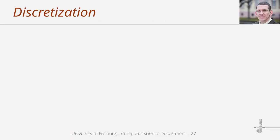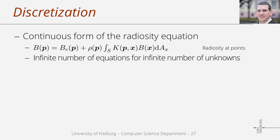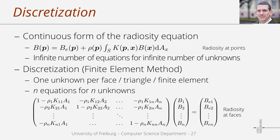In the second part we continue with the derivation of the radiosity rendering approach. In the first part we derived the continuous form of the radiosity equation considered at all points p of a scene. If we consider this equation at all surface points, we end up with an infinite number of unknown radiosity values. To reduce these to a finite number n, we discretize the scene geometry into n patches, for instance triangles, and assume the radiosity is constant within one patch to get just one unknown radiosity value per patch.